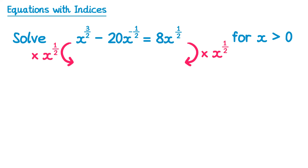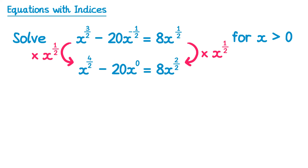Now if you multiply the left hand side by x to the power one half, we'll start with x to the three over two. Remember when you multiply you add the indices: 3 over 2 plus one half is 4 over 2, so we get x to the 4 over 2. Moving on to the next term, we add the indices: negative one half plus one half is 0, so we get minus 20x to the power 0. And for the right hand side we add one half to one half, so we get 8x to the power 2 over 2.